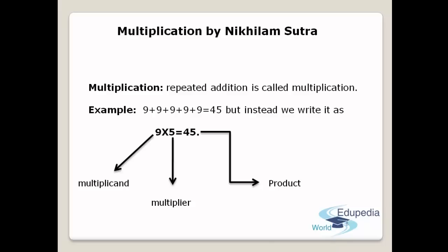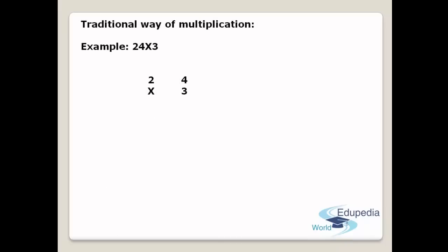Now let us see how we do multiplication in the traditional way. In our traditional way of multiplication, we use the following process to obtain the product. For example, taking 24 into 3: to multiply 24 and 3, I write 24 into 3. I then multiply the digit 3 and 4 first, because 3 is multiplied to the units digit of the Multiplicand. 3 fours are 12, so you get the answer 12.